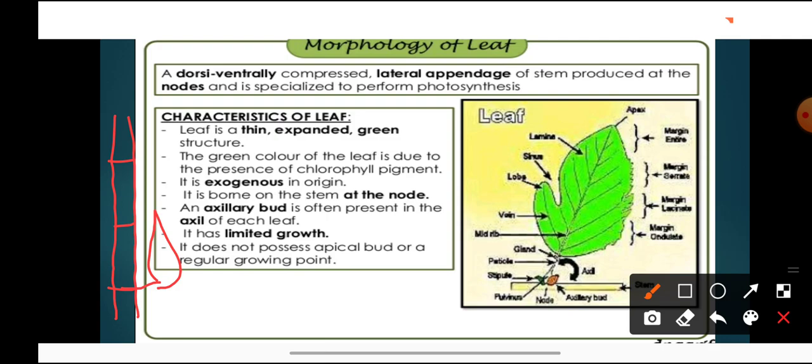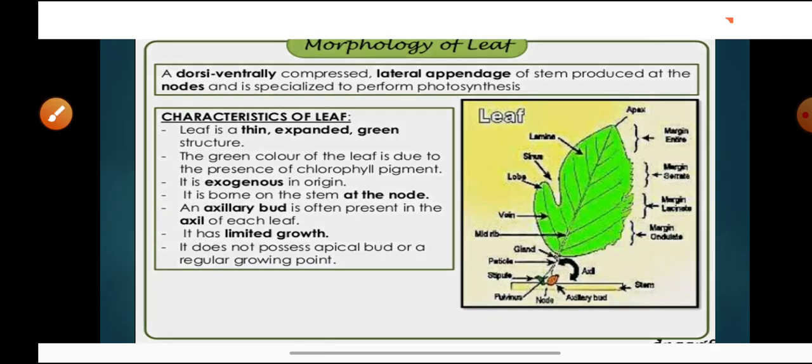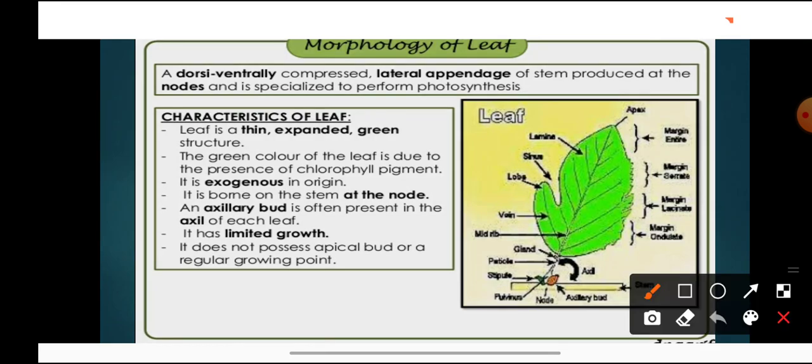Leaves are dorsi-ventrally compressed. Leaves have two surfaces — one dorsal surface and one ventral surface. Dorsal surface is the upper surface which is facing the stem, and ventral is the lower surface. So leaves are dorsi-ventrally compressed lateral appendages present at the node area, and they are specialized to perform the process of photosynthesis because they are green in color.